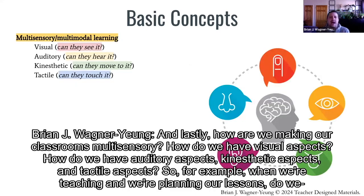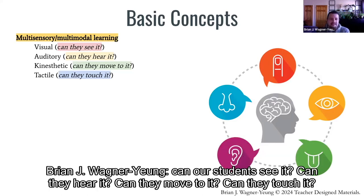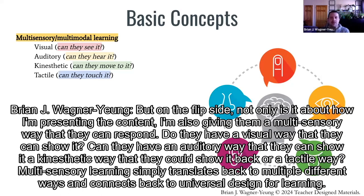How are we making our classrooms multi-sensory? How do we have visual, auditory, kinesthetic, and tactile aspects? When planning lessons, can students see it, hear it, move to it, and touch it? But on the flip side, it's also about giving them a multi-sensory way to respond — a visual, auditory, kinesthetic, or tactile way to show what they know. Multi-sensory learning connects directly back to Universal Design for Learning.